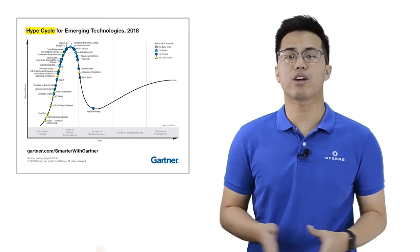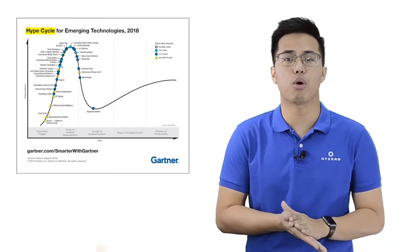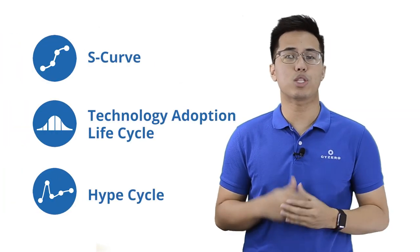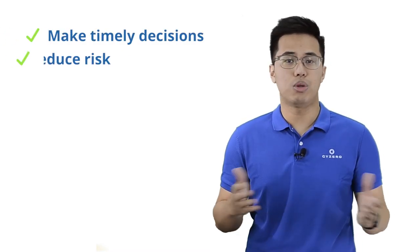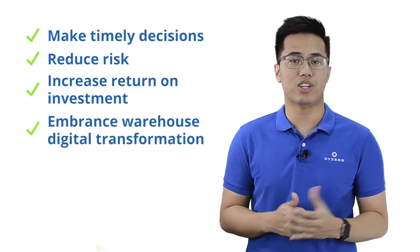This graph is the latest hype cycle Gartner has released. I will also link the hype cycle page down below if you want more information. These three frameworks are the fundamental basis to analyze when to adopt a new warehouse technology. It helps warehouse managers and other decision makers to make timely decisions, reduce risk, increase return on investment, and embrace the warehouse digital transformation. Warehouses are faced with so much new technology. These frameworks will guide you to decide when the right time to invest.